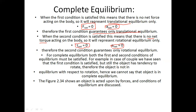The second condition guarantees only rotational equilibrium. For complete equilibrium — both translational and rotational — both the first and the second conditions of equilibrium must be satisfied simultaneously.